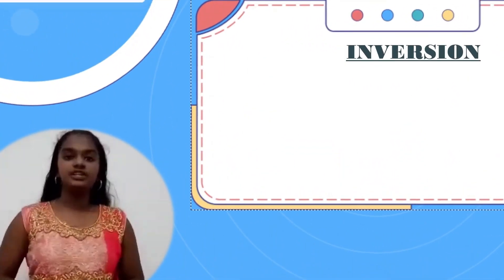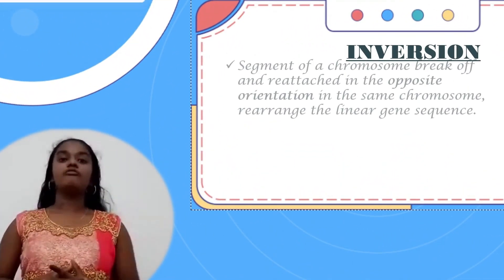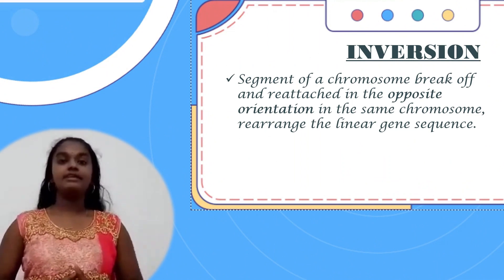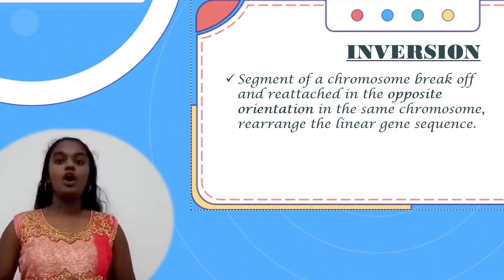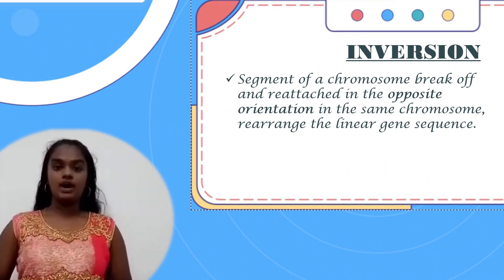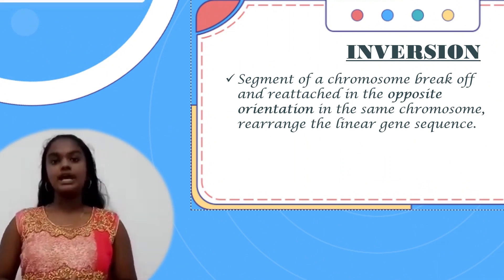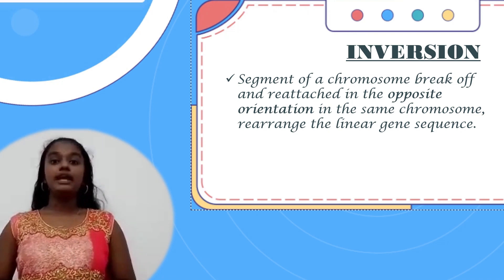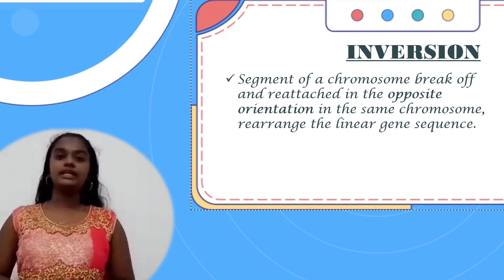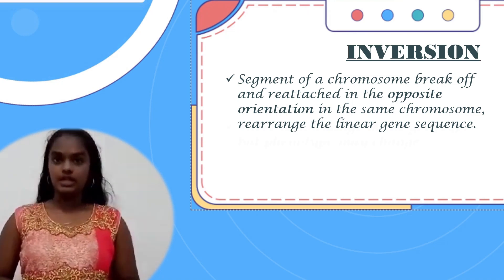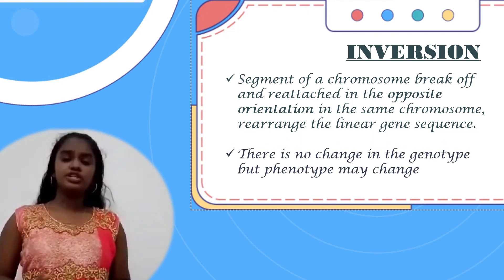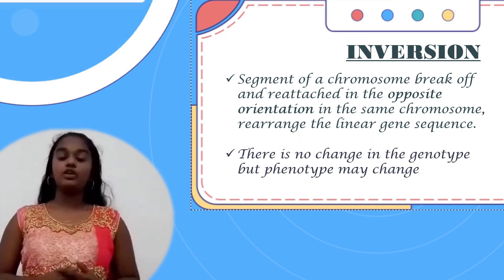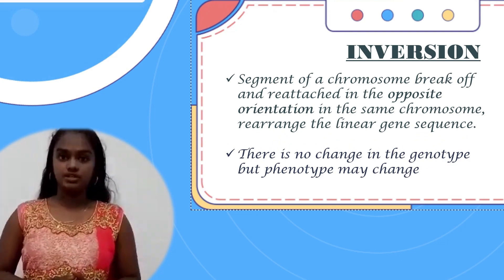Inversion refers to a segment of the chromosome that breaks off and reattaches in the opposite orientation in the same chromosome, rearranging the gene sequence. There is no change in genotype but the phenotype may change.